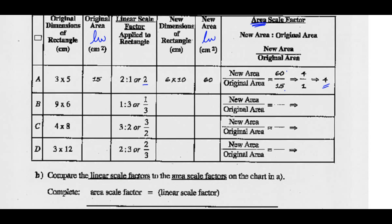Let's do rectangle B together. The original dimensions of rectangle B are 9 by 6. So my original area should be 9 times 6, or 54 square centimeters. I'm applying a scale factor of 1 third. So 1 third of 9 is 3, and 1 third of 6 is 2, so my new dimensions are 3 by 2. That gives me an area of 3 times 2, or 6 square centimeters. The new area was 6 over the original area of 54. So 6 over 54 is the same as 1 over 9 — that would be my area scale factor.